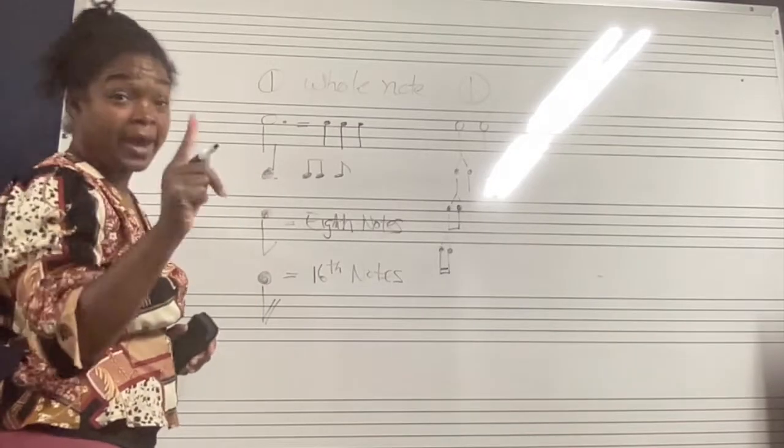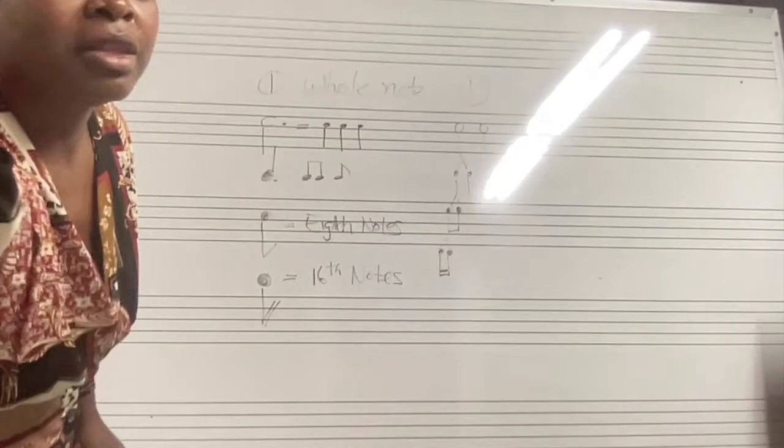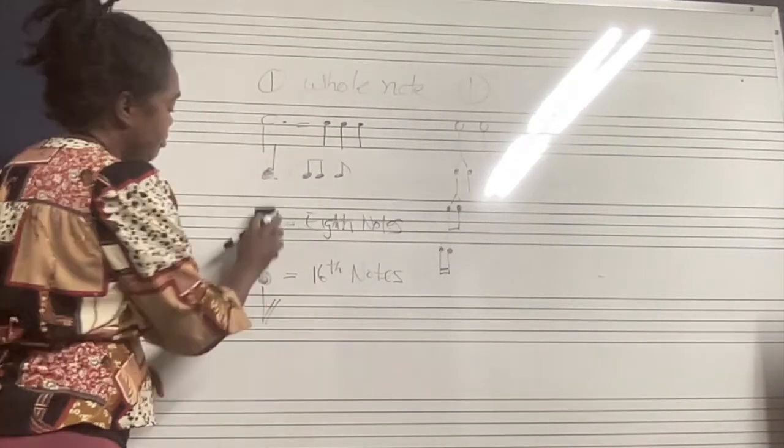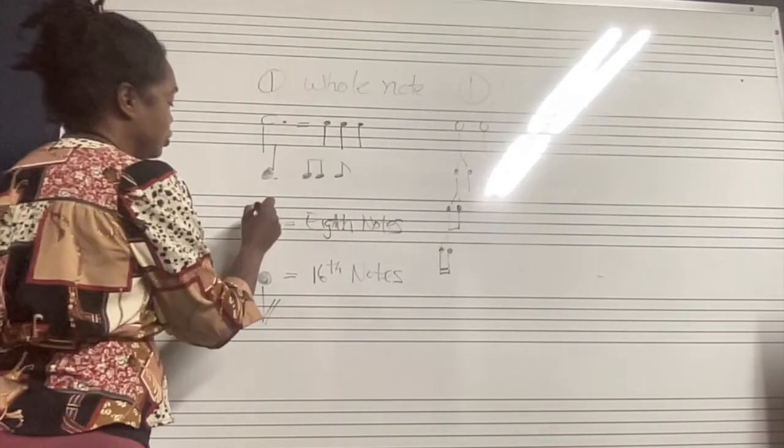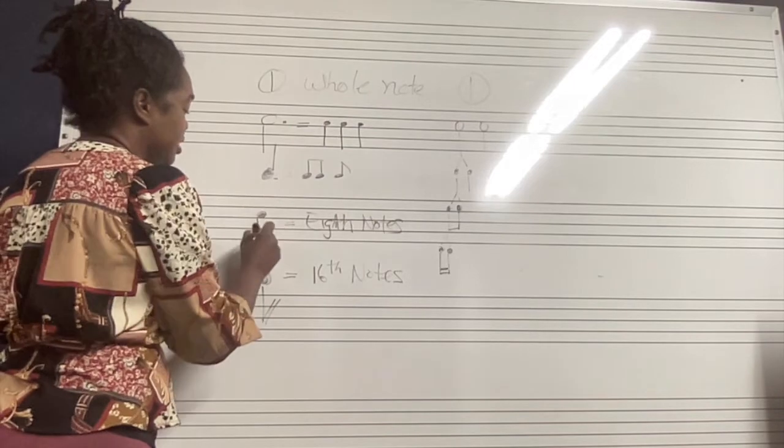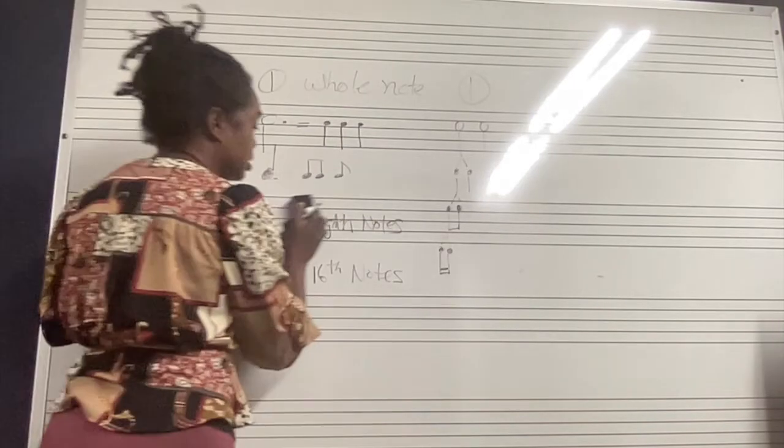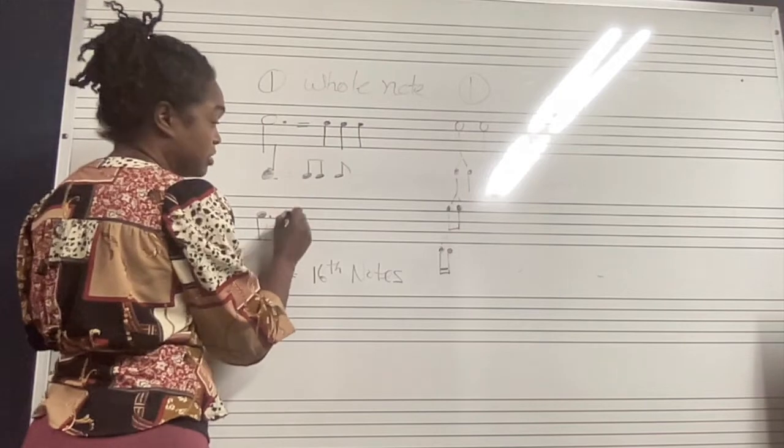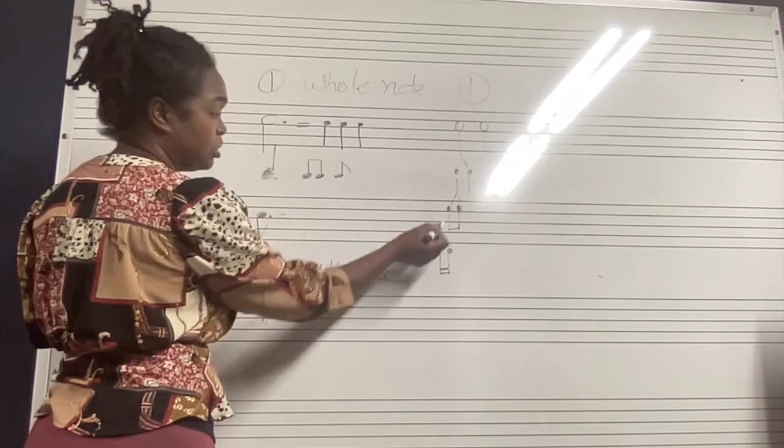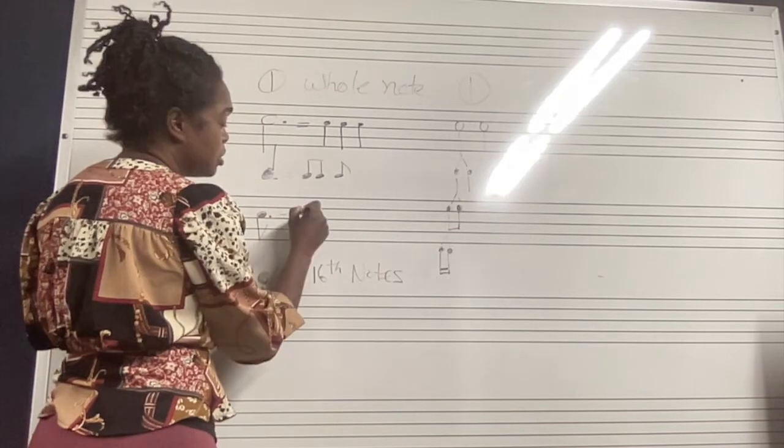If I put a dot next to this eighth note, then it's going to give us three sixteenths. Because if we cut the eighth note into two, we get two sixteenths, so it's going to give us three sixteenths.